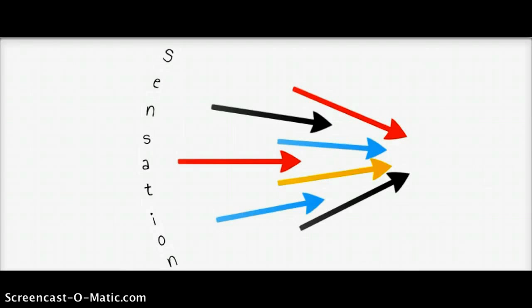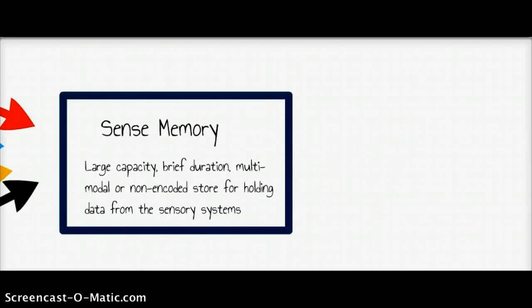These feed into what is now known as sense memory. This was the store that wasn't originally proposed in the model but has since been adopted and inserted in most accounts of multi-store models. It's got a large capacity - it handles all the sensory input from our sensory systems.